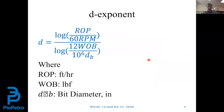The d-exponent is defined as: log(ROP / 60·RPM) divided by log(12·WOB / (10^6 × bit diameter)). Units are in field units — foot per hour, pounds-force, and inches for bit diameter. If we want to account for mud weight effects, we define a corrected d-exponent, which equals the d-exponent times the ratio of normal pore pressure to ECD (equivalent circulating density).